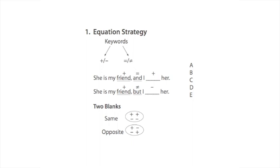They must follow the rules of logic, which is an equation. Now they can have she is my friend, but I, and there's a blank her.